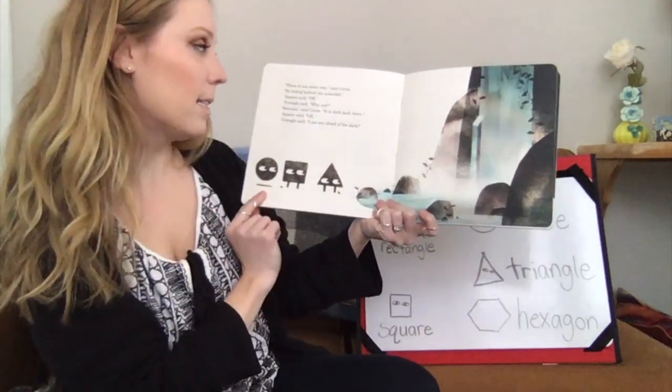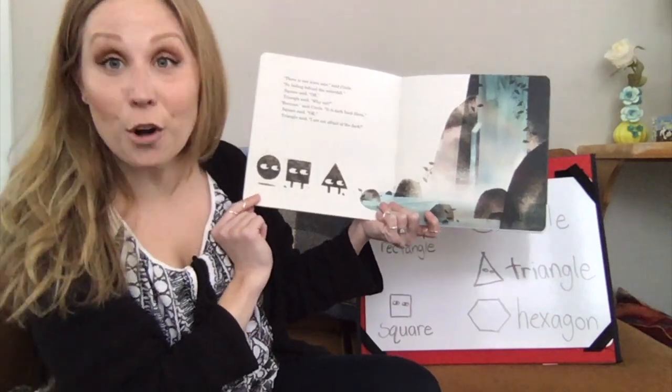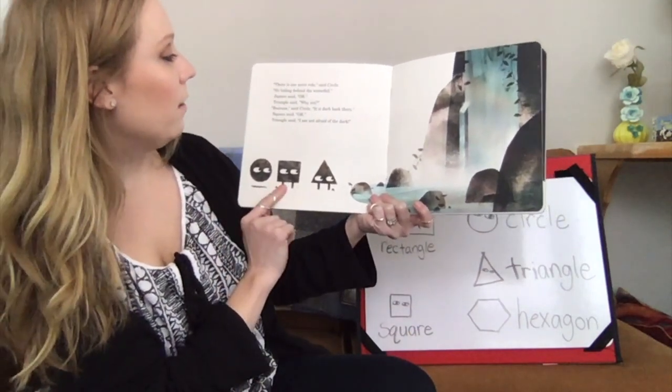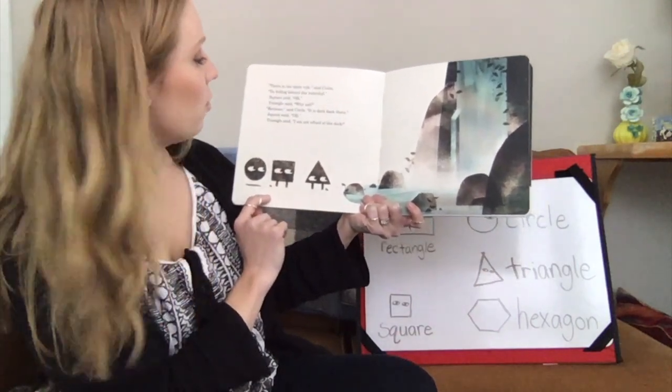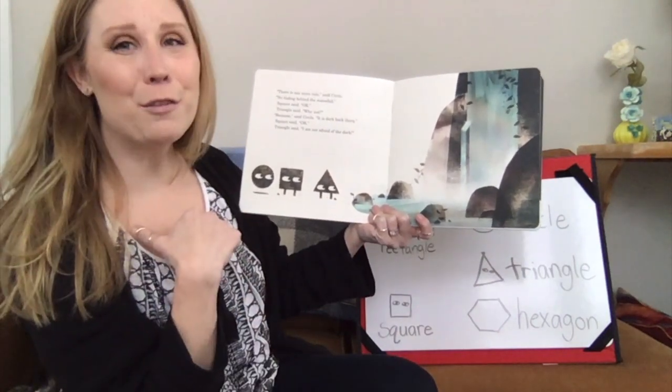Because, said Circle. It's dark back there. Square said, okay. Triangle said, I'm not afraid of the dark.